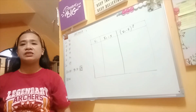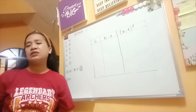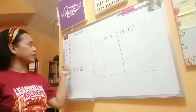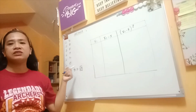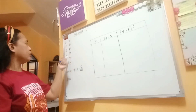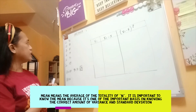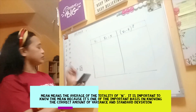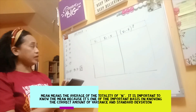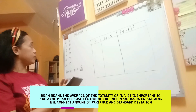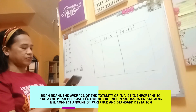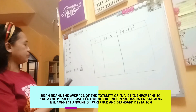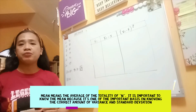For the computation of variance and standard deviation, the first thing we're going to do is get the mean of the numbers, from student 1 up to student 6. We need to add all 6 values. So we have 93 plus 90 plus 87 plus 73 plus 70 plus 87, divided by 6. The mean is 83.33%.